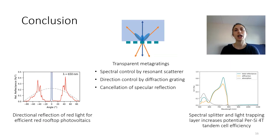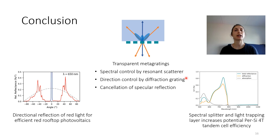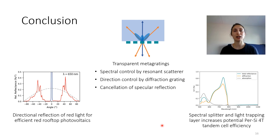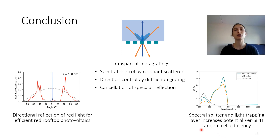To conclude, I hope I could show you today that we can use transparent metagratings to control the spectrum and direction of light by placing resonant scatterers into diffraction gratings. We can also cancel the specular reflection by creating destructive interference between the scattering and the reflection. We applied these transparent metagratings to two applications: first, creating a red rooftop solar cell with directional reflection of red light; and second, improving a four-terminal perovskite-silicon device by including a spectral-splitting and light-trapping layer in the perovskite cell. Thank you for your attention and I'm happy to take your questions.